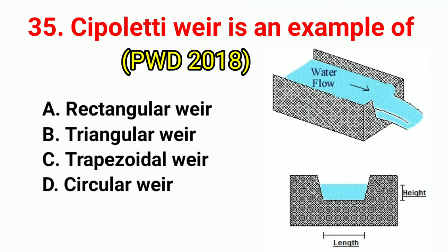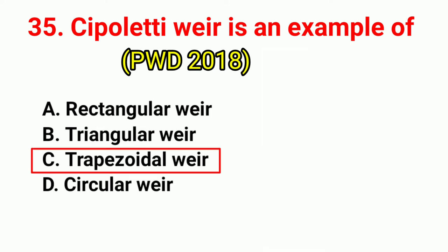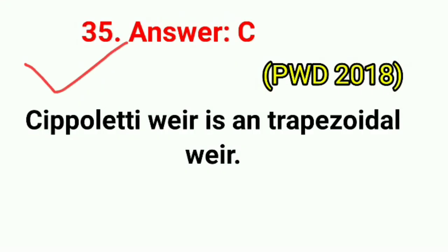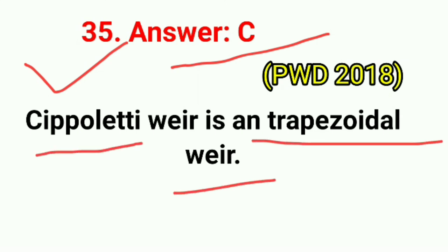Question No. 35. Cipolletti weir is an example of? Correct answer is option C: trapezoidal weir. Cipolletti weir is a trapezoidal weir.